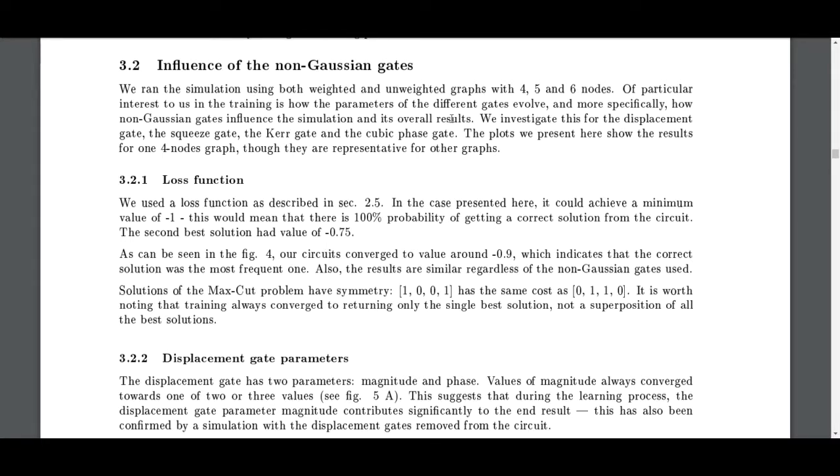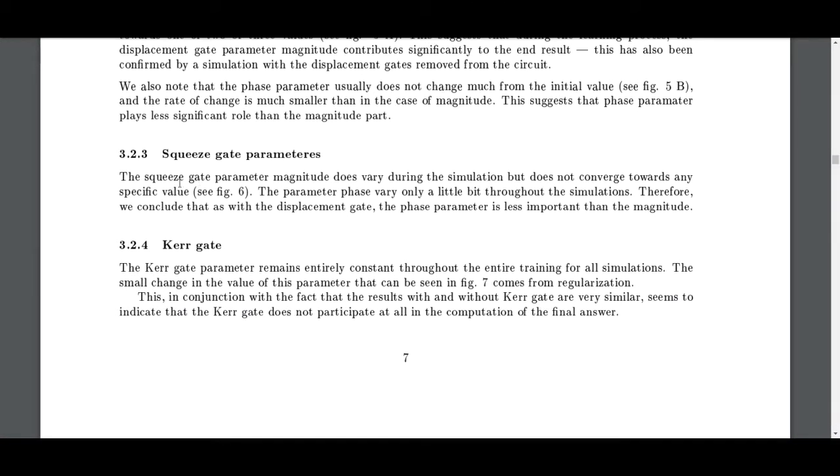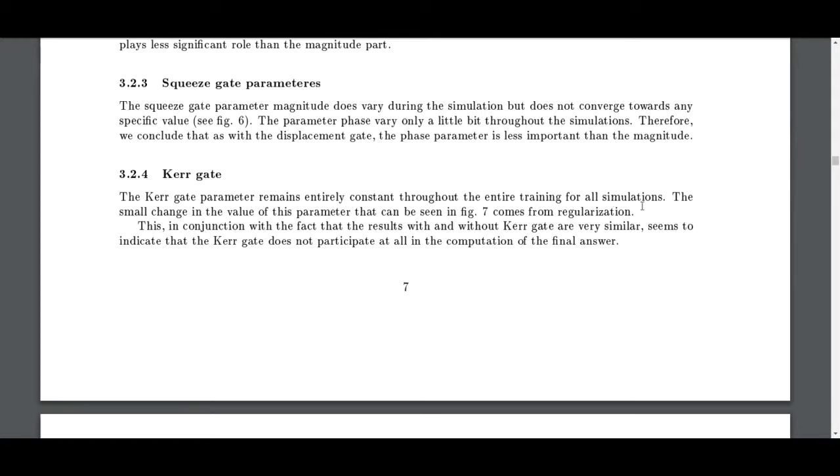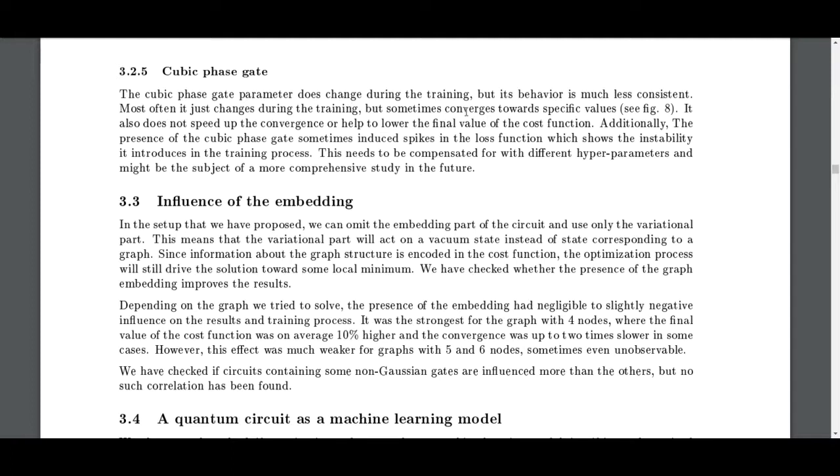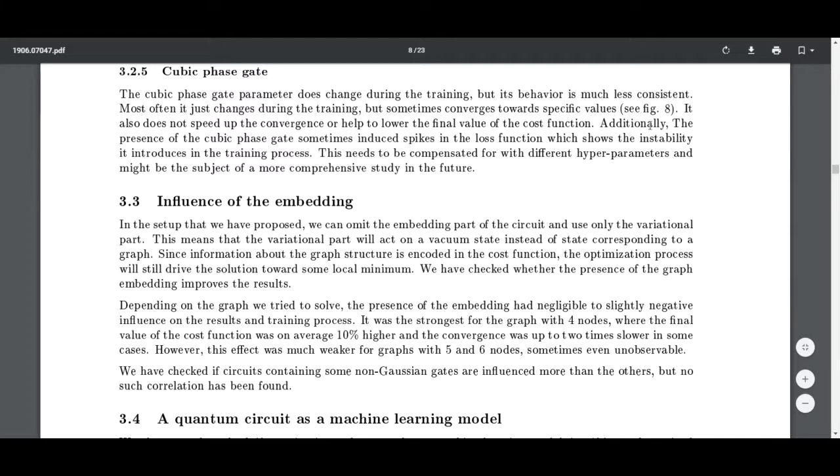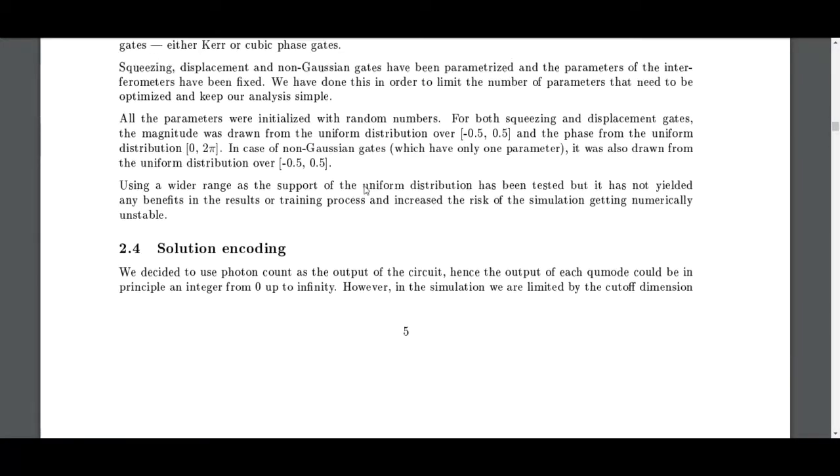Training algorithm and experimenting results. The interest in training is how parameters at different gates evolve, and more specifically how non-Gaussian gates influence the simulation. The squeeze parameter magnitude does vary during simulation but does not converge towards any specific value. The phase parameter varies only a little. With the displacement gate, the phase parameter is less important than the magnitude. There's entirely constant throughout the entire training - any small change in the value of this parameter comes from regularization. This is in conjunction with the fact that the results with and without Kerr gate are very similar - the Kerr gate does not participate at all in the computation. The cubic phase gate parameter does change during the training but its behavior is much less consistent. Most often it just changes during the training but sometimes converges towards specific values.